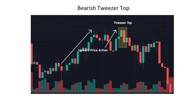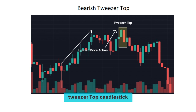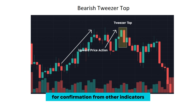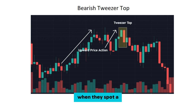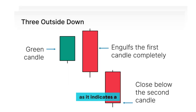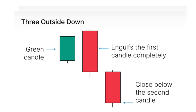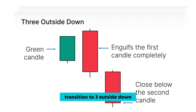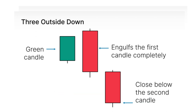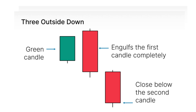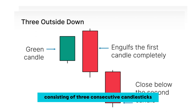Now let's talk about the tweezer top — a pattern formed by two candlesticks with almost equal highs. This signifies potential resistance and a possible reversal to the downside. Traders often look for confirmation from other indicators when they spot a tweezer top, as it indicates a potential change in market dynamics.